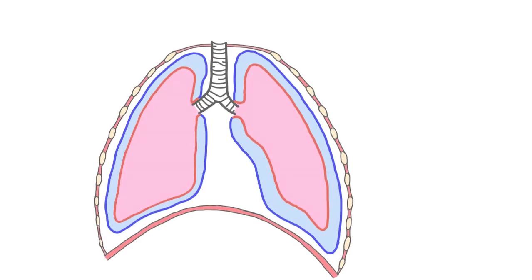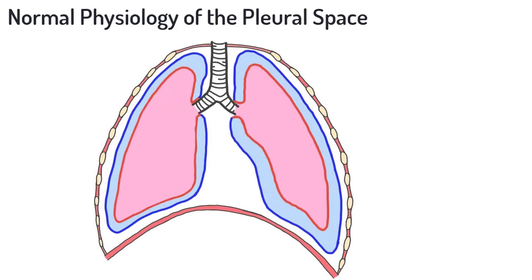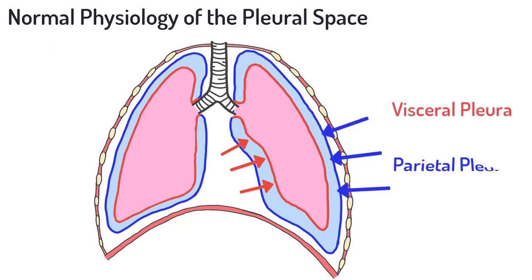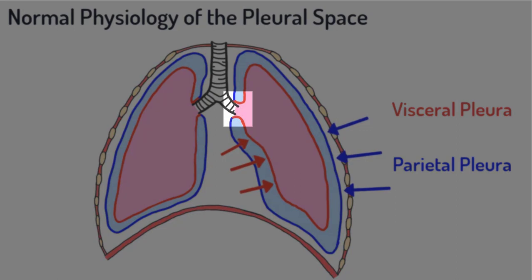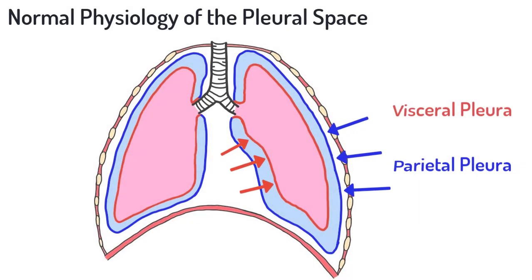To begin, let's review the normal anatomy and physiology of the pleural space. Recall that the pleural space is bordered by the visceral pleura, which lines the outer surface of the lungs, and also by the parietal pleura, which lines the deep surface of the chest wall. The two layers of tissue are continuous at the hilum of each lung and form a potential space between them.